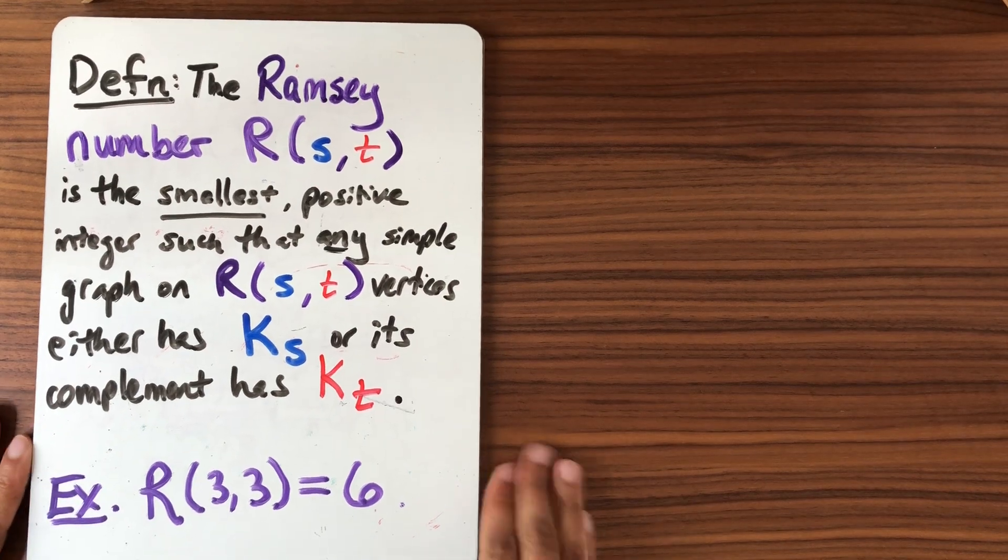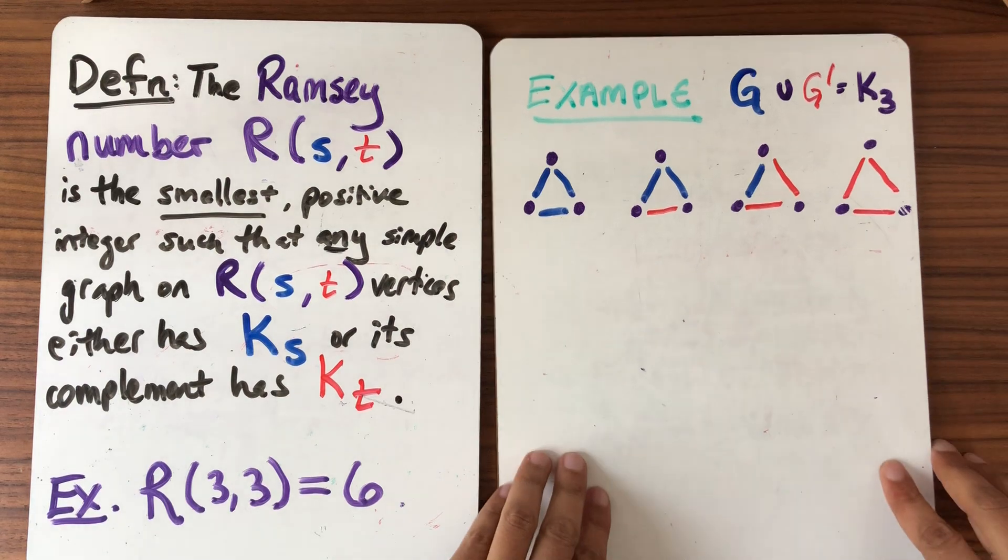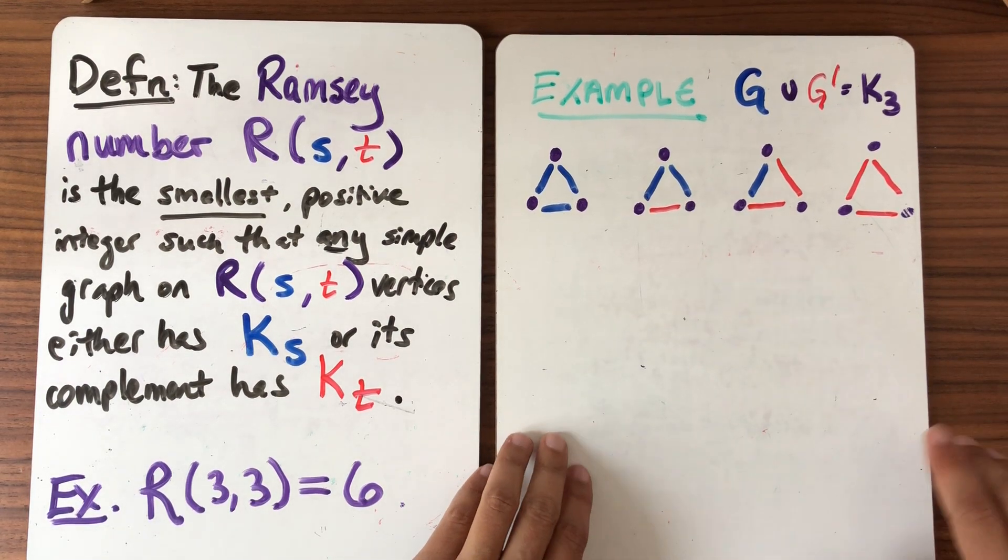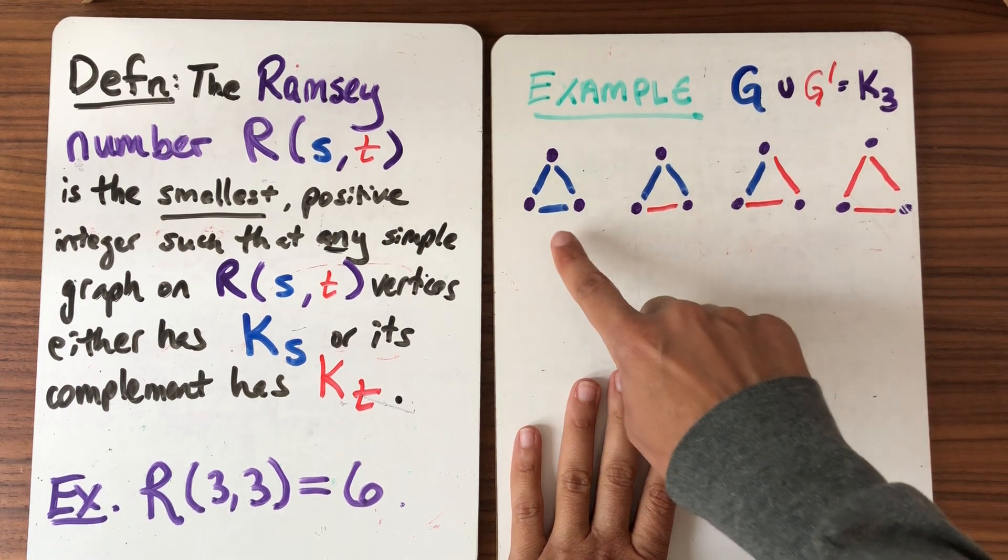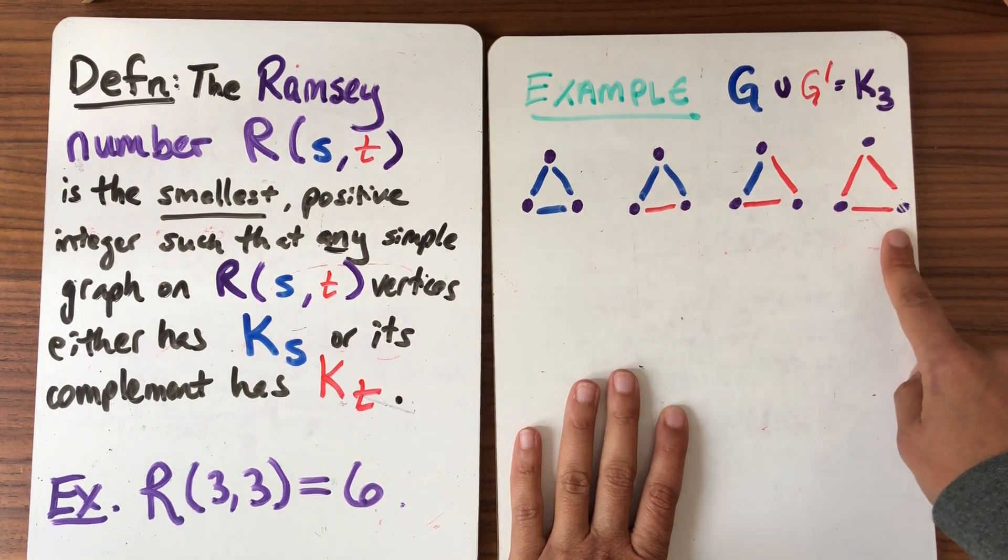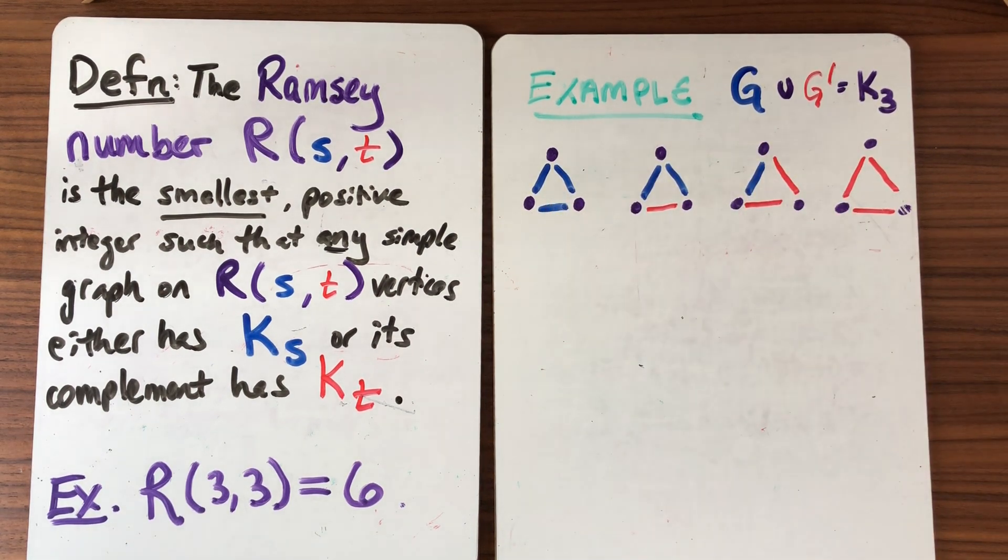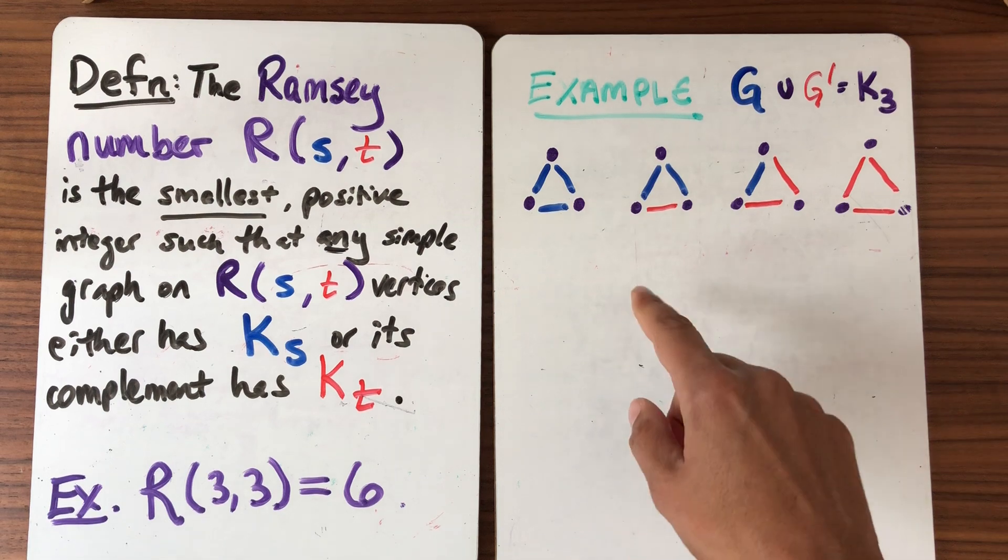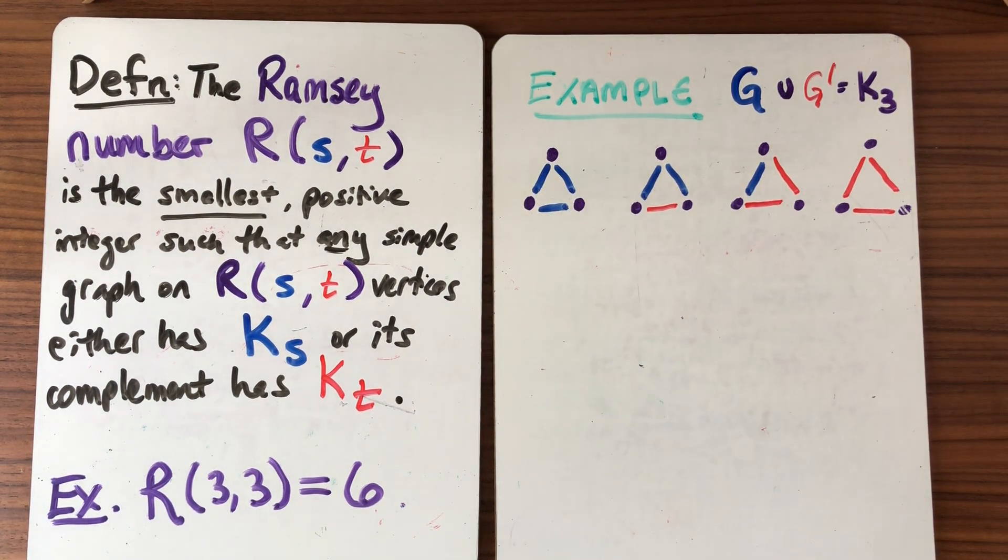So another way to think about this is the example we did last time when we were looking at triangles. If we think about drawing the complete graph and we can color every edge either red or blue. These are the four different possibilities for the complete graph K_3 where every edge is either red or blue. And what we're looking for is when do we have a blue clique, a complete graph that's blue or a complete graph that's red.